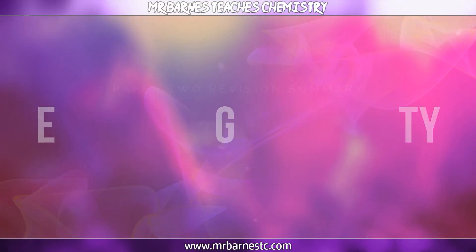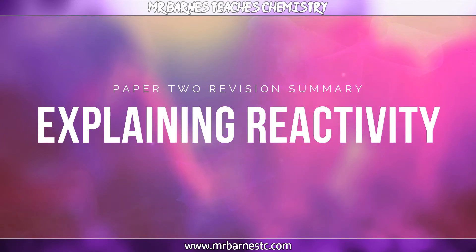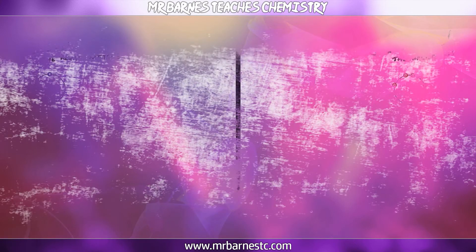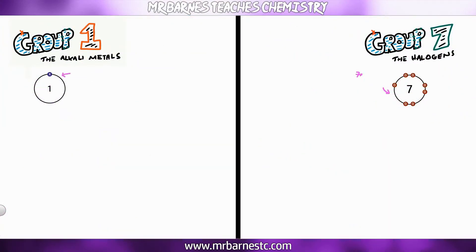Okay final part of the video how can we explain why group 1 increases in reactivity as you go down the group but group 7 decreases. And we're going to start off looking at the outer shells.